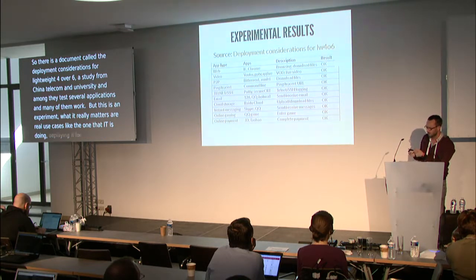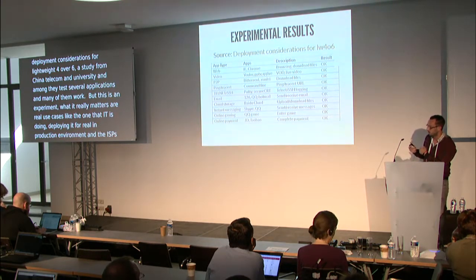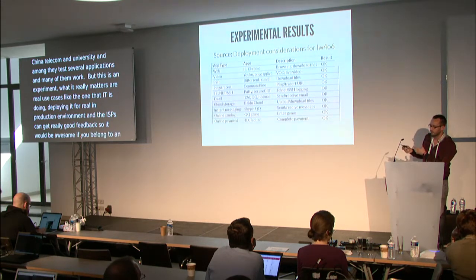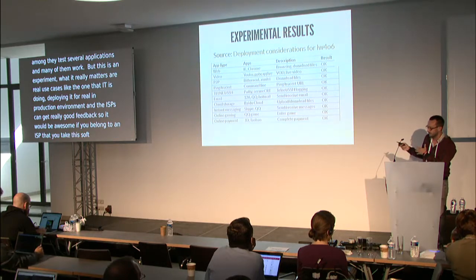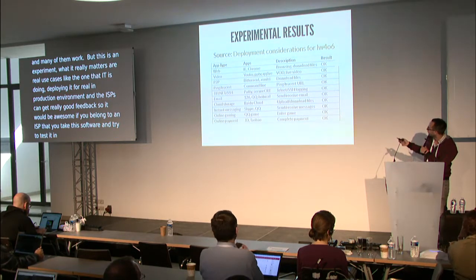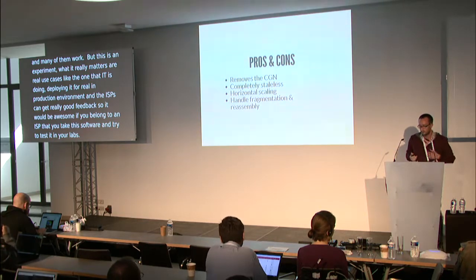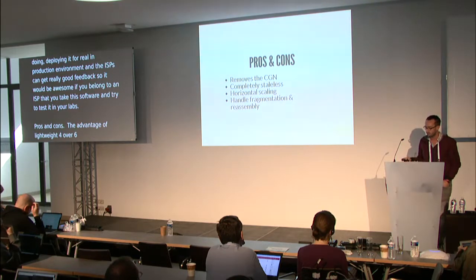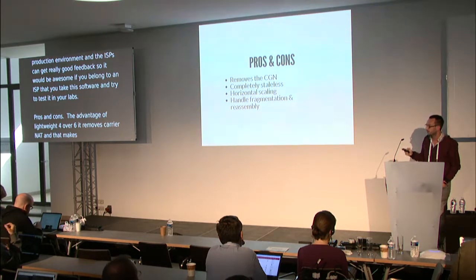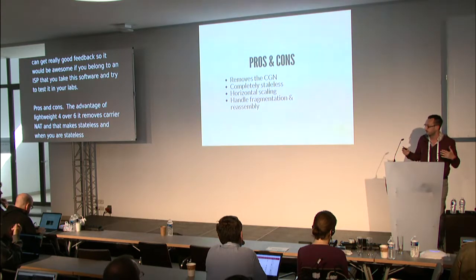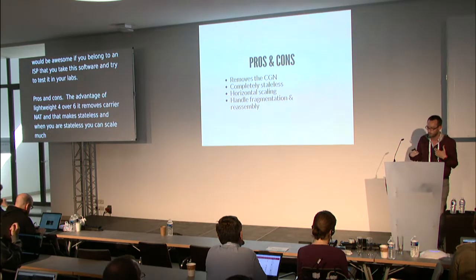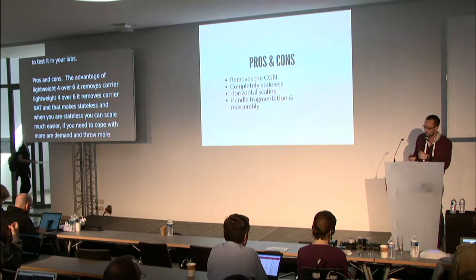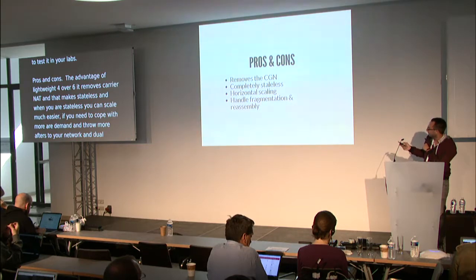ISPs can get really good feedback from real deployments. It would be great if ISPs took this software and tested it in their labs. The advantage of Lightweight 4 over 6 is that it removes the carrier-grade NAT, making it stateless. When you are stateless, you can scale much more easily — if you need to cope with more demand, you just add more AFTRs to your network. The inconvenience, as with dual stack lite, is that it still has to handle fragmentation and reassembly.